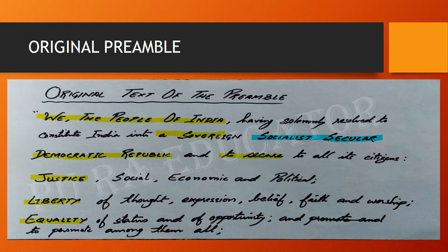Socialist and Secular were added by the 42nd Amendment Act of 1976 when Indira Gandhi was the Prime Minister of India, during the emergency period. Socialist means the government will function in favour of the society; no person will be given higher or lower value based on monetary value — whether rich or poor, they will be treated equally. Secular means the state will never follow any religion but will support all religions, whether Islam, Hinduism, Christianity, or other religions.